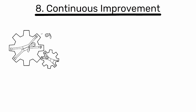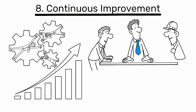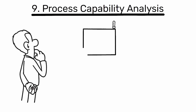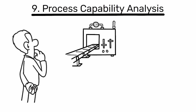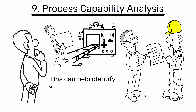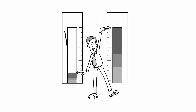8. Continuous improvement: foster a culture of continuous improvement where employees are encouraged to identify and eliminate sources of variation. 9. Process capability analysis: regularly analyze your process capability to understand how well your process can meet specifications. This can help identify areas of high variation that need improvement.